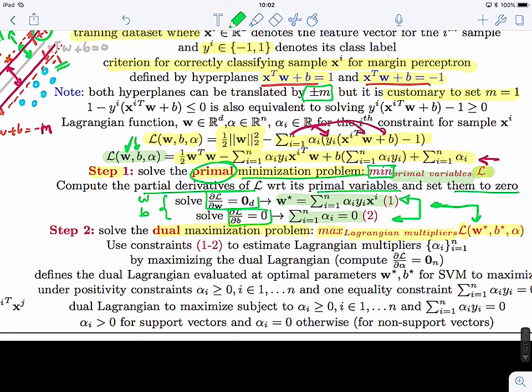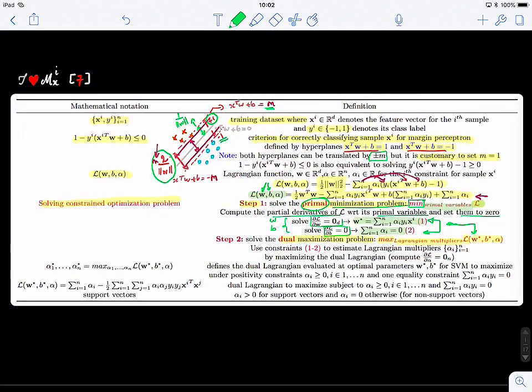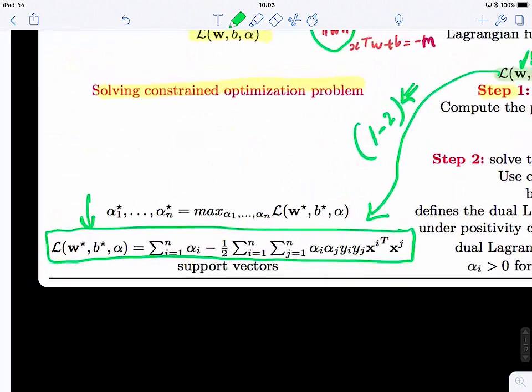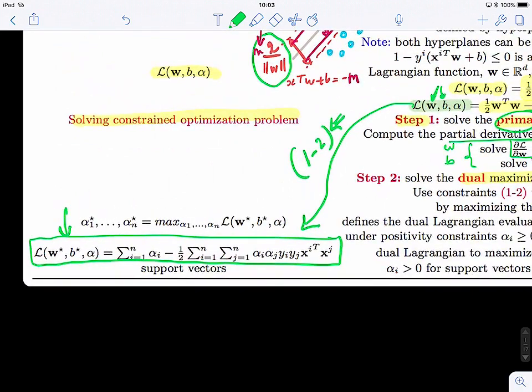And you guys remember, when we have done that, we got the explicit form of the Lagrangian, which is this one. And we have updated the Lagrangian by integrating the constraints one and two that were discovered when solving the primal problem. So once we update this and we explicitly write it down, next would be to maximize over all alphas.